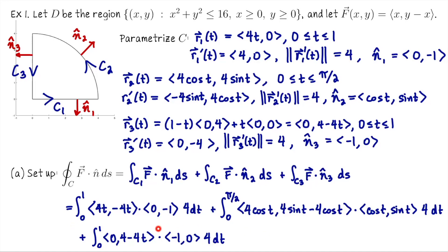For C1, taking the dot product and multiplying by 4 gives 16t, so we integrate ∫₀¹ 16t dt. For C2, expanding the dot product gives terms 4 cos²t + 4 sin²t - 4 cos t sin t, all times 4, integrated from 0 to π/2. This simplifies to 16 cos²t + 16 sin²t - 16 cos t sin t, integrated from 0 to π/2.